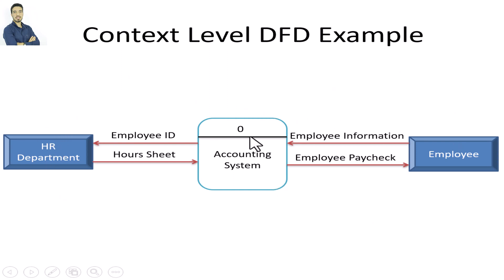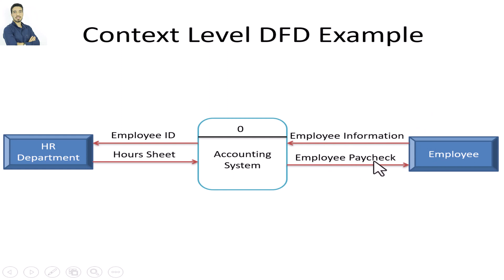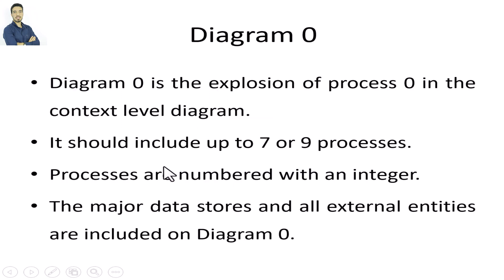In the main process I write the name of the system: 'Accounting System.' Then I add data flows: the employee gives the system personal information and receives a paycheck; the HR department receives the employee ID and provides the system with the hours sheet.